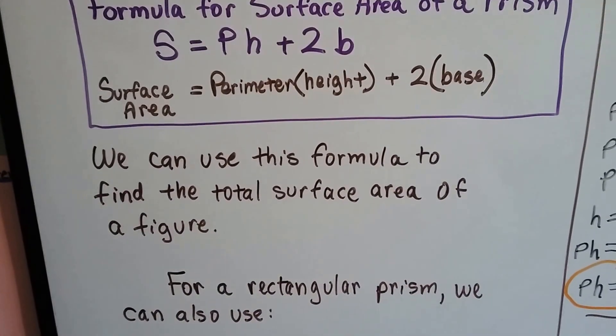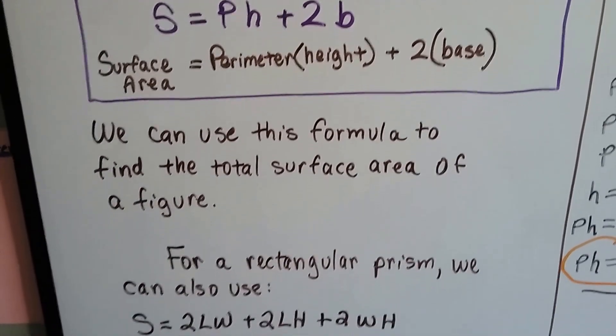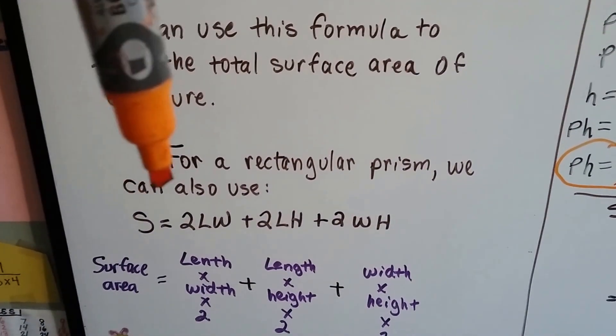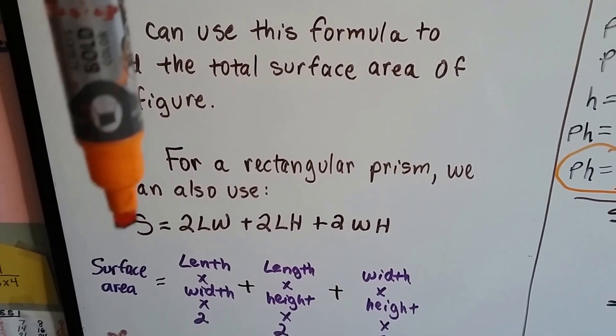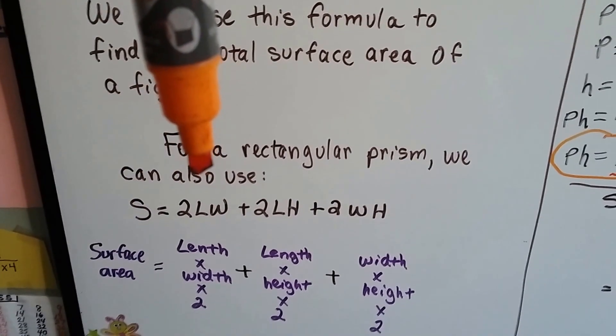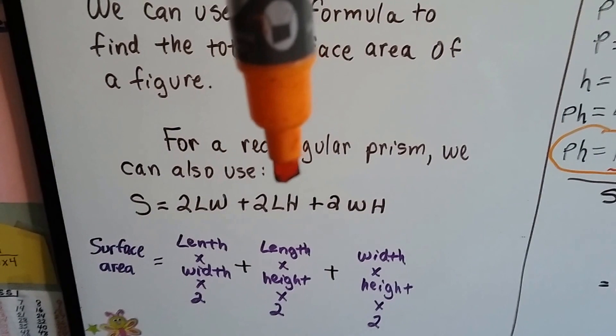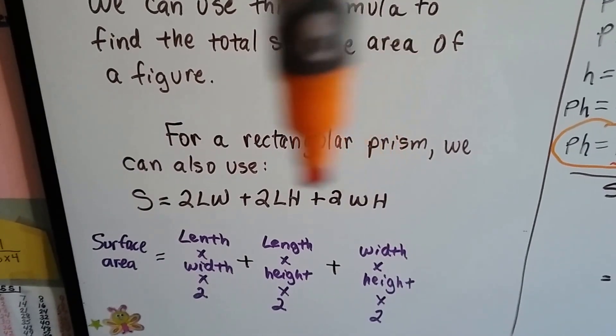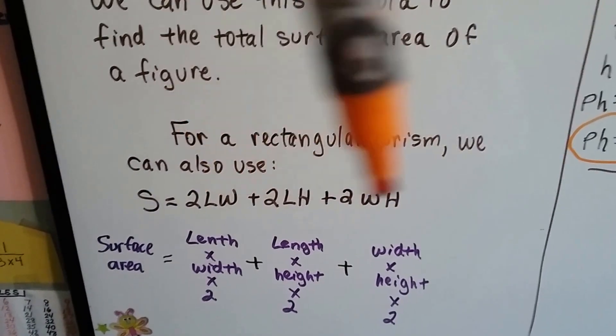We can use this formula to find the total surface area of a figure. For rectangular prism, we can also use S equals 2 times the length times the width, 2 times the length times the height, and 2 times the width times the height added together to get a total sum.